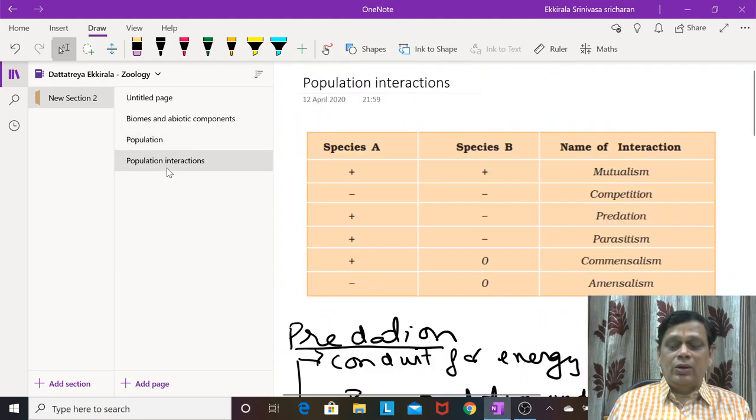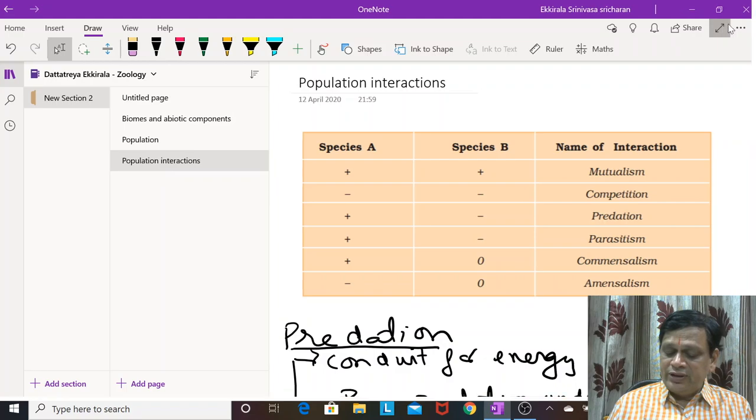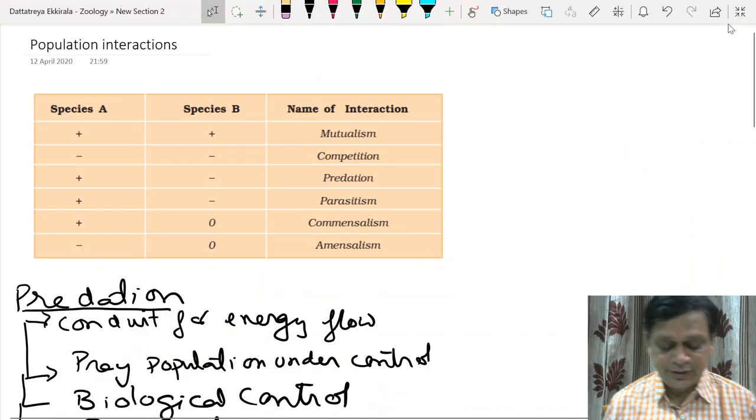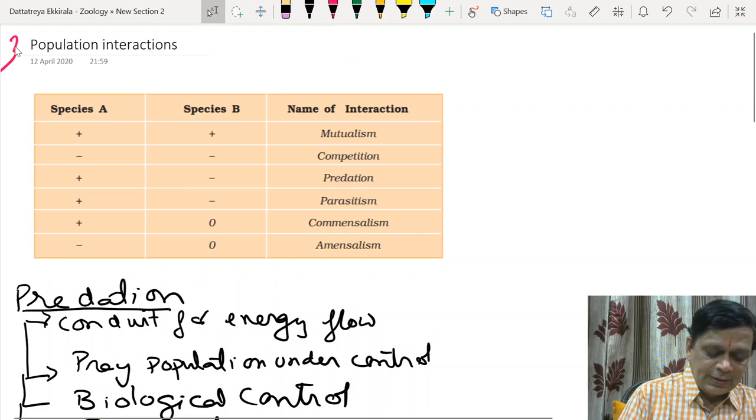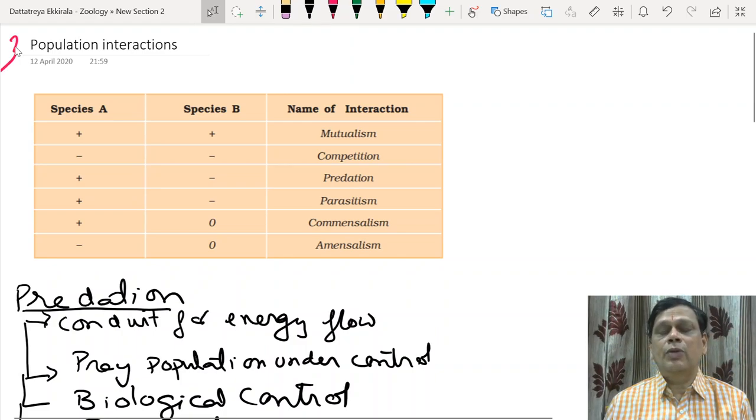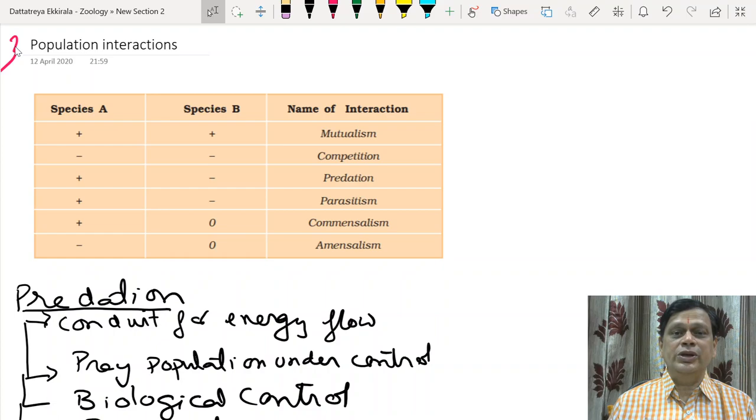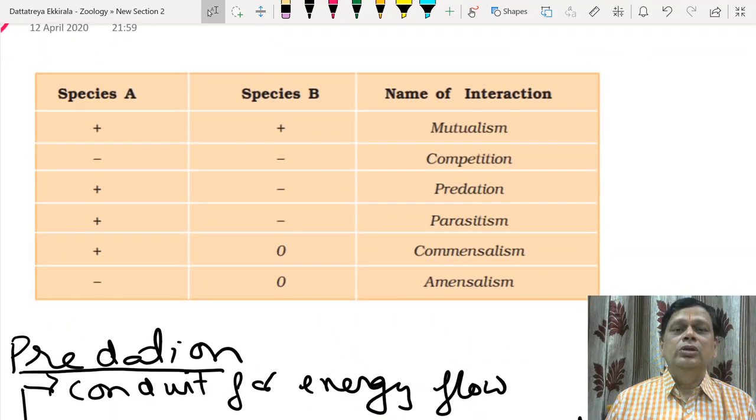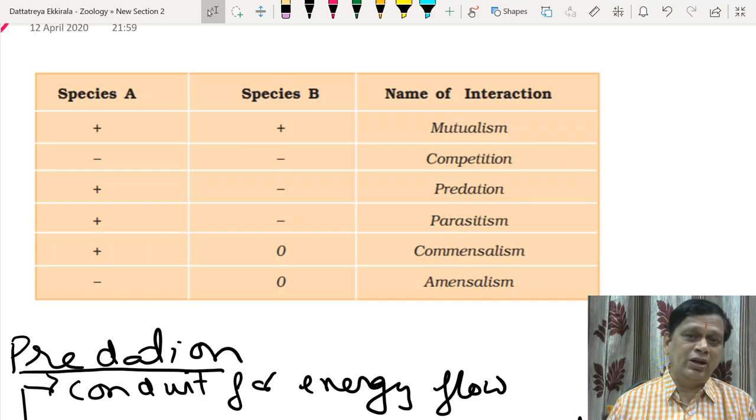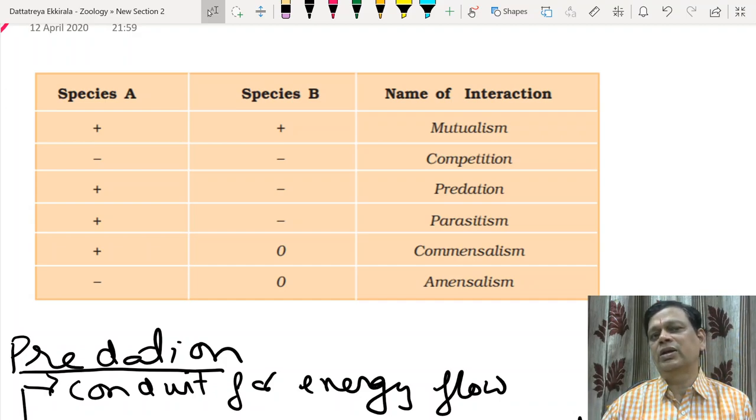Now let us deal with the third aspect in organisms and population: population interactions. No organism on this earth is totally independent, it has to depend on others. Biotic components are influenced by abiotic and abiotic things are influenced by biotic.